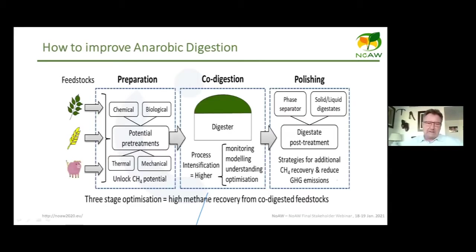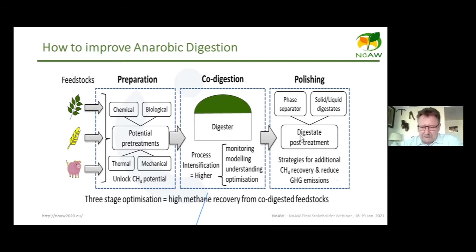To improve this process, the first step is pre-treating feedstocks — chemically, physically, or biologically — to unlock their methane potential. The digester itself can be intensified through monitoring and relevant optimization approaches, and post-treatment focuses on recovering fertilizers.